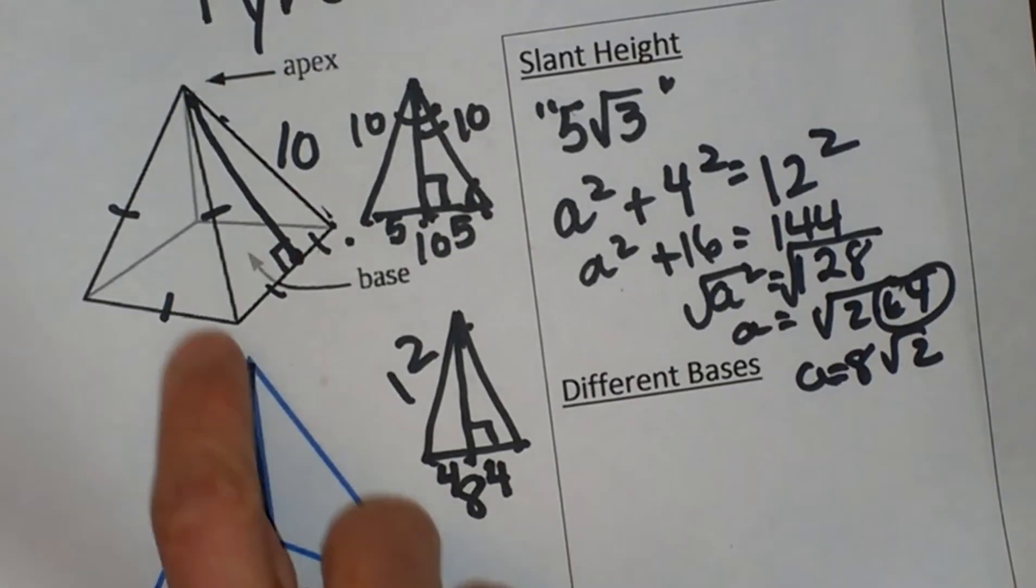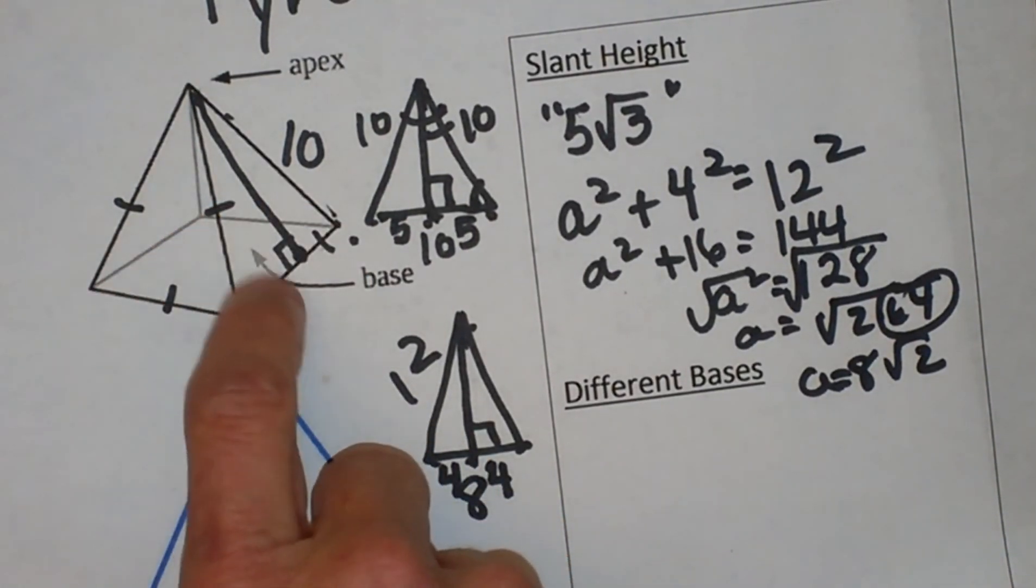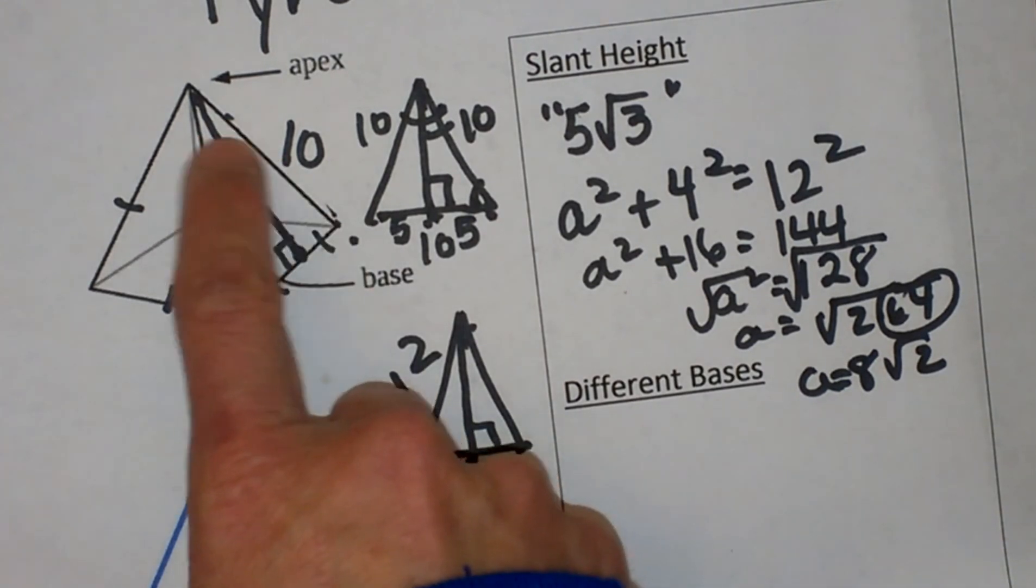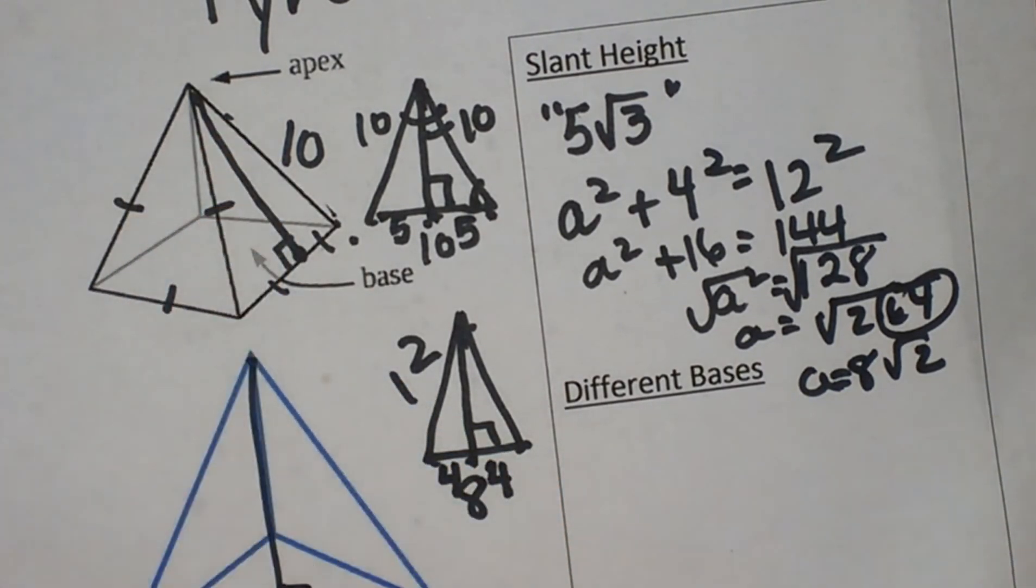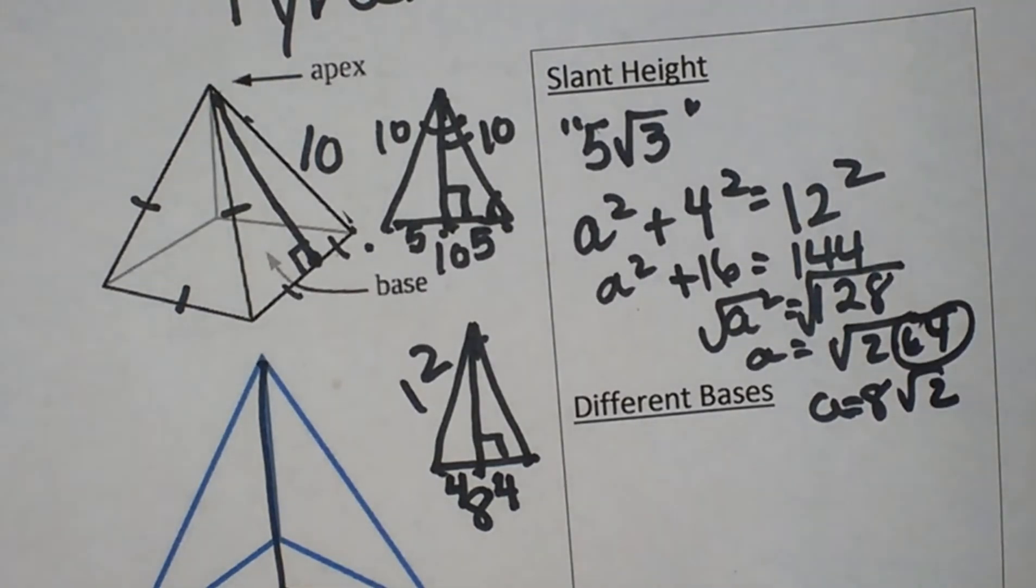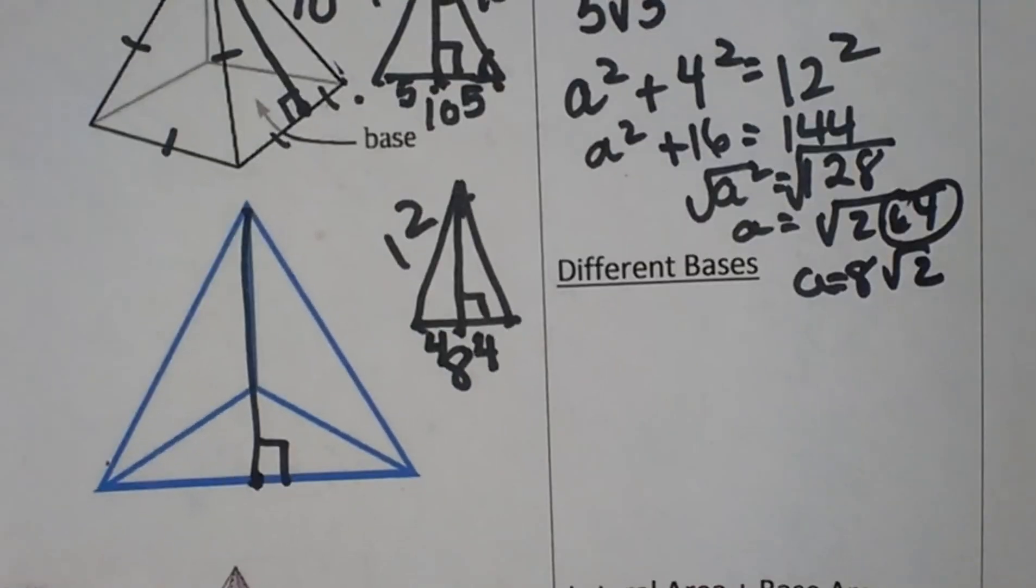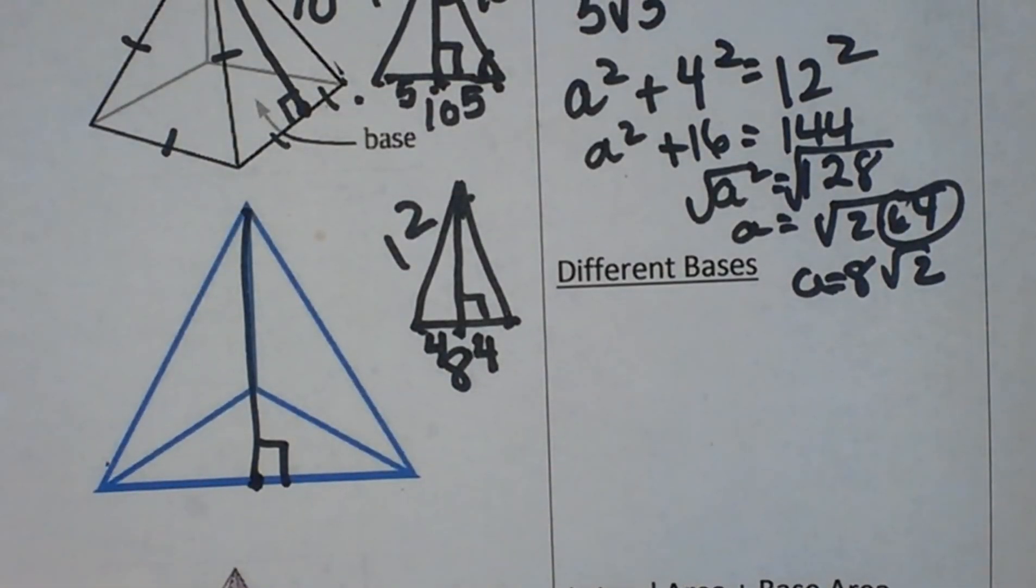And then on a square pyramid we have four triangular lateral faces. So that's the explanation of the different kinds of bases and how many faces are associated with each kind.